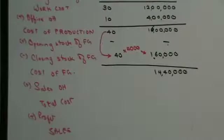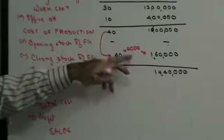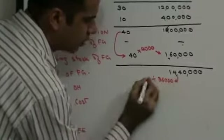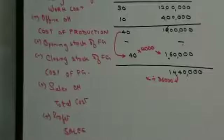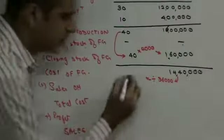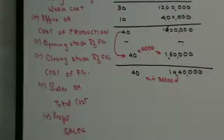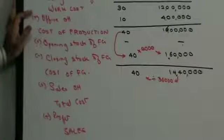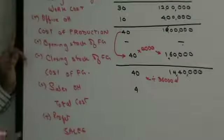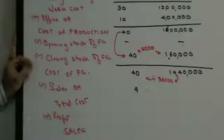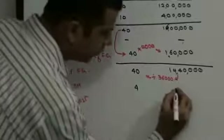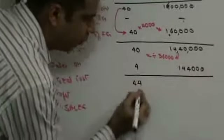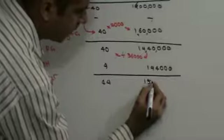40,000 units were produced, 4,000 are unsold, so 36,000 units were sold. Divide 14,40,000 by 36,000 to get CPU of 40 for cost of finished goods. Selling overheads is sales commission of 4 rupees per unit multiplied by 36,000 units sold: 4 into 36,000 is 1,44,000. Hence total cost is 44 CPU and 15,84,000 PC.